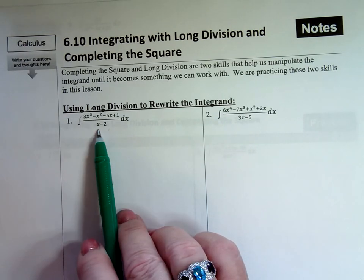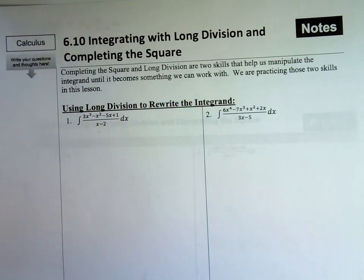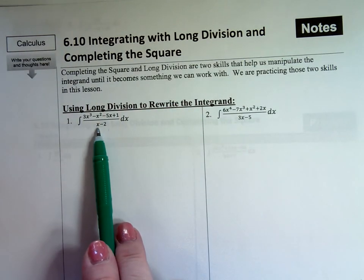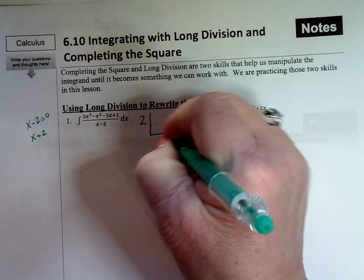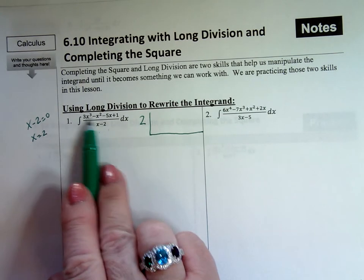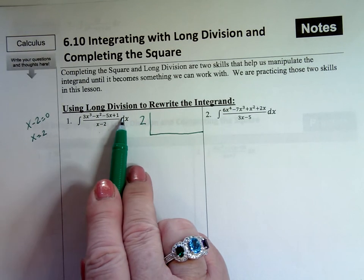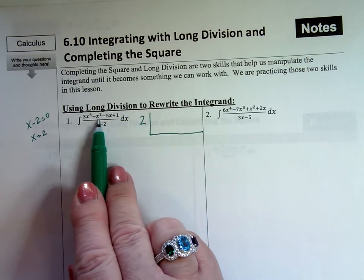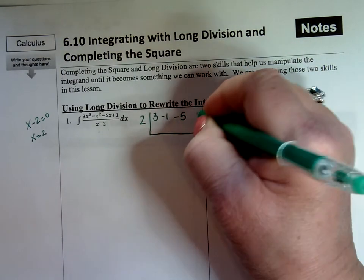I'm going to try synthetic division with this one. The reason I'm choosing synthetic is because I can easily take this and solve x minus 2 equals 0 — that gives me x equals 2. That's the value you put outside the synthetic division box. Then I take the coefficients from my numerator. I have a 3x cubed, and I need to make sure all powers are represented; if not, I put a 0 placeholder. So I have 3, negative 1, negative 5, and positive 1.